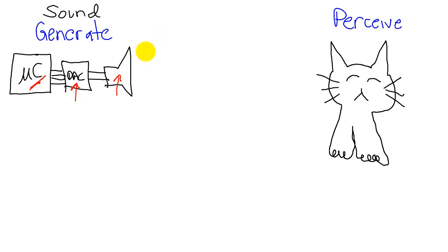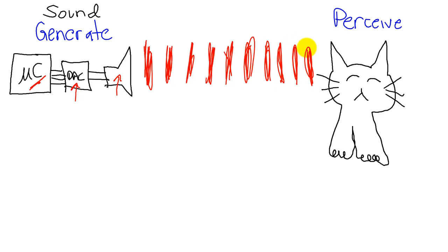The sound is air pressure and so we're going to have pieces of air at high pressure followed by pieces at low pressure, high pressure, low pressure, high pressure, low pressure. And this pressure wave is going to traverse the air and our ears are going to perceive it.